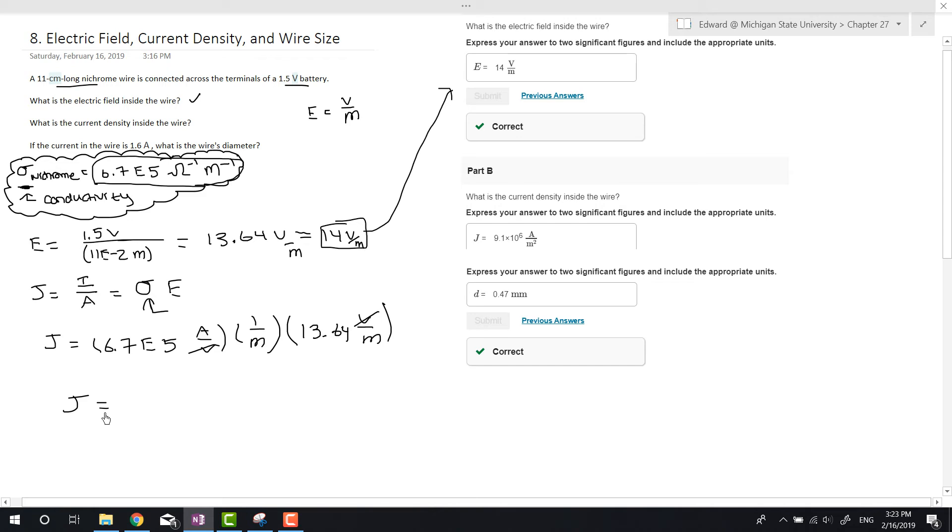So J equals 6.7×10^5 times 13.64, which gives us 9.1×10^6 amps per meter squared, which matches the answer. So we've got parts A and B done.